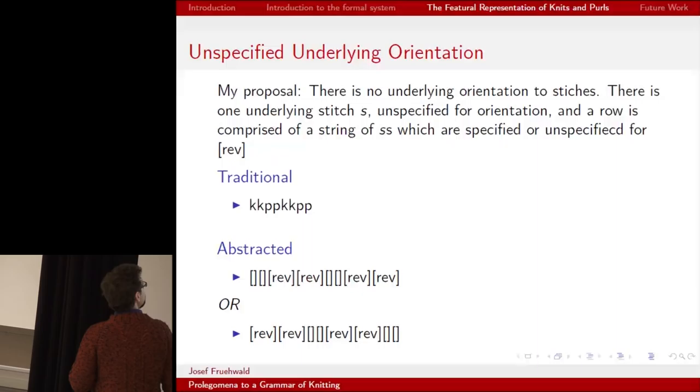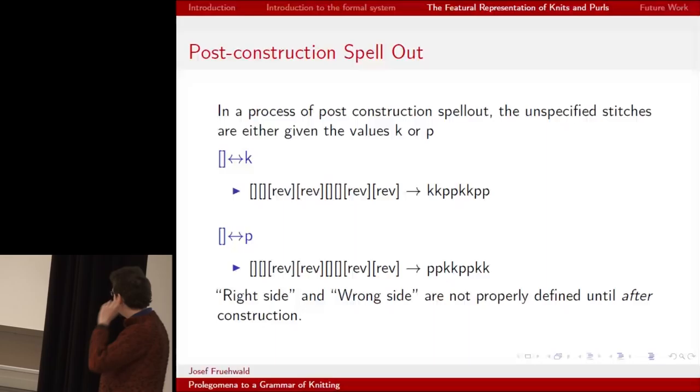So my proposal is that there is a single unspecified stitch. And each row of knitting is a sequence of unspecified and reverse specified stitches. Then there is a process of post-construction spell-out whereby unspecified stitches are given the value knit or purl, and the reverse features are vice versa. This has the logical consequence. As you can see, these are the same rows of stitches, but due to the different spell-out rules, come out very differently.